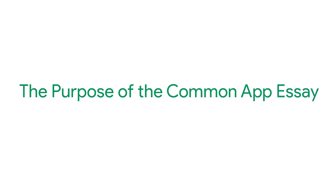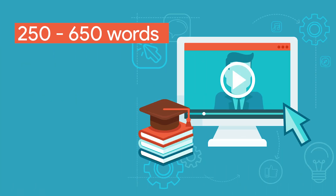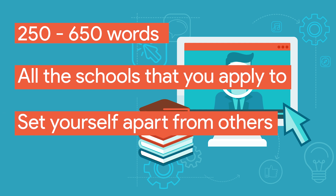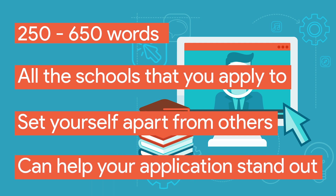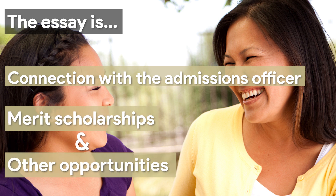Before we discuss what to avoid while writing your college essay, let's briefly discuss the essay itself. The Common App essay must contain between 250 to 650 words and will be sent to all the schools that you apply to. Because there are so many qualified applicants at top universities, the essay is how you can set yourself apart from others. If you and another applicant have the same profile, the essay can help your application stand out. The essay is the place to build a connection with the admissions officer. This human connection is critical for setting yourself apart and can even help with merit scholarships or other special programs and opportunities.